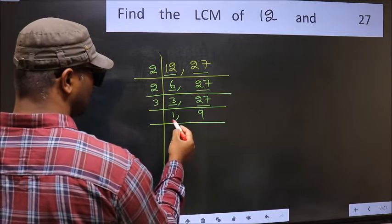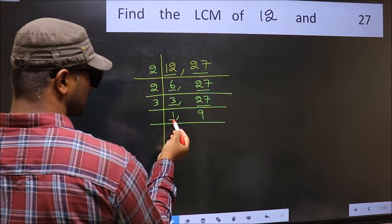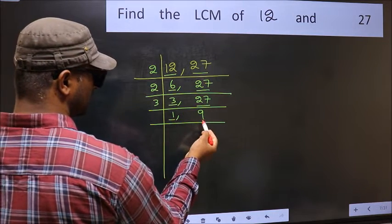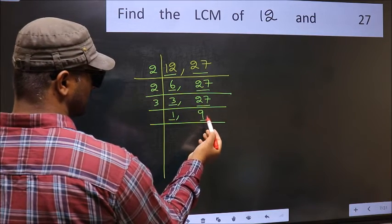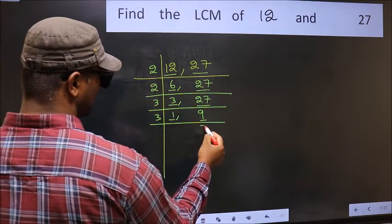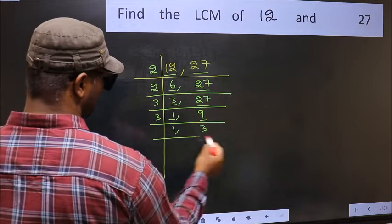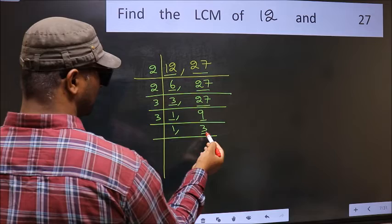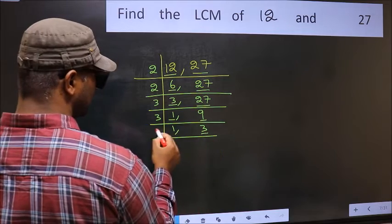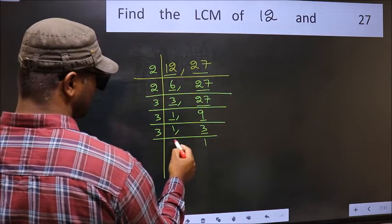Now we got 1 here, so focus on to the next number, 9. 9 divided by 3 gives 3, since 3 times 3 is 9. Now we have 3, which is a prime number, so 3 times 1 is 3.